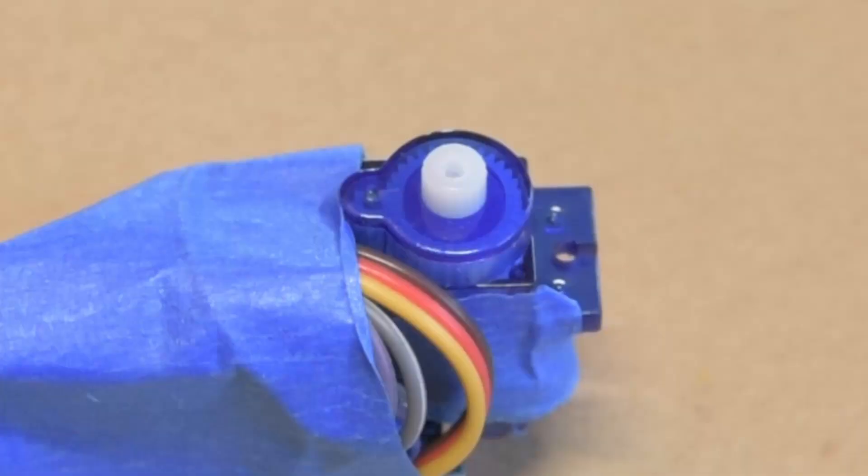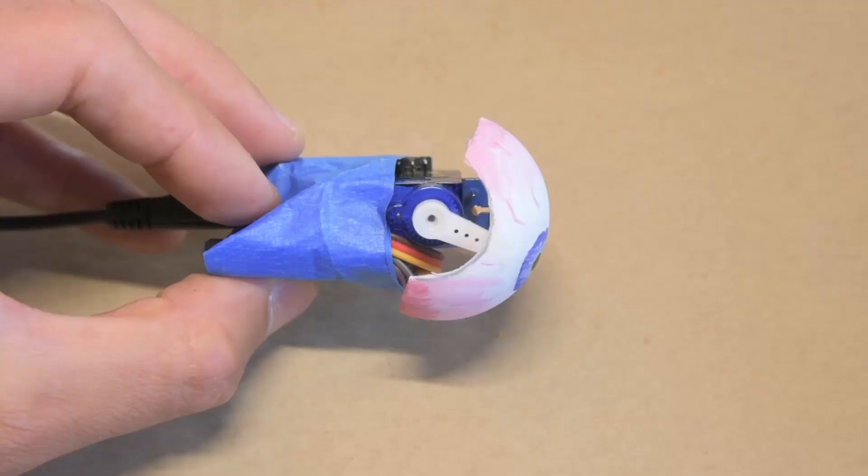Before uploading the program for the first time, I carefully removed the servo horn and ping pong ball, and I let it run a full animation sequence, which always starts and ends with the motor centered, and then I unplugged the Arduino and reinstalled the eyeball now that the motor was perfectly centered.